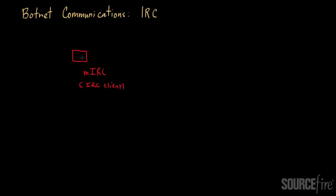They would package the IRC client together with their malware. When the malware got installed and executed, it was designed so that on launch, the IRC client would connect to an IRC server. This could be either a legitimate IRC server that was partially co-opted, or an entirely malicious IRC server operated purely by the bot master. The bot would effectively join a specific channel.